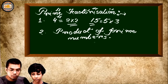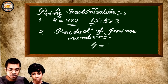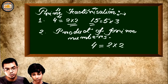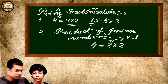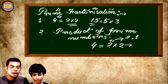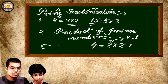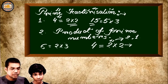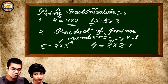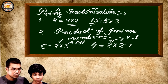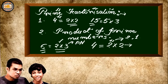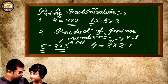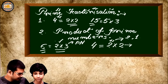Consider 4: it is found as 2 into 2. The number 2 has only two factors — 2 and 1 — so 2 is a prime number. Now consider 6: it can be written as 2 into 3. Both 2 and 3 are prime numbers, so we have factorized 6 into two prime numbers. This is what we call prime factorization.